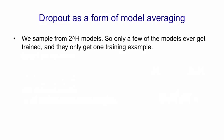So we can think of dropout as a form of model averaging. We sample from these 2 to the H models. Most of the models will never be sampled. And a model that is sampled only gets one training example. That's a very extreme form of bagging. The training sets are very different for the different models, but they're also very small.